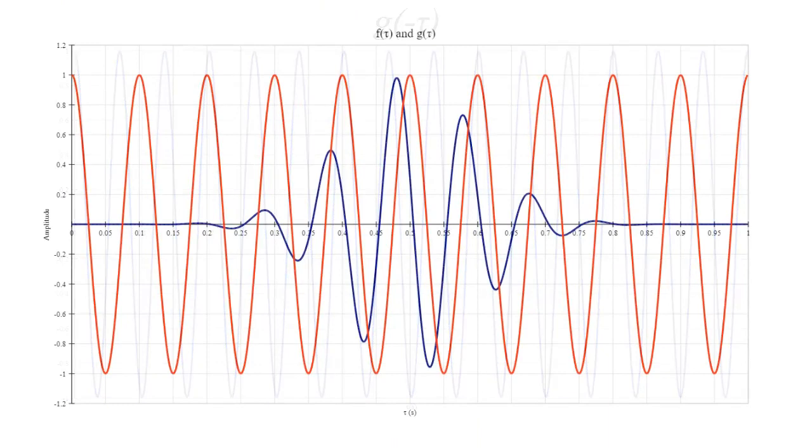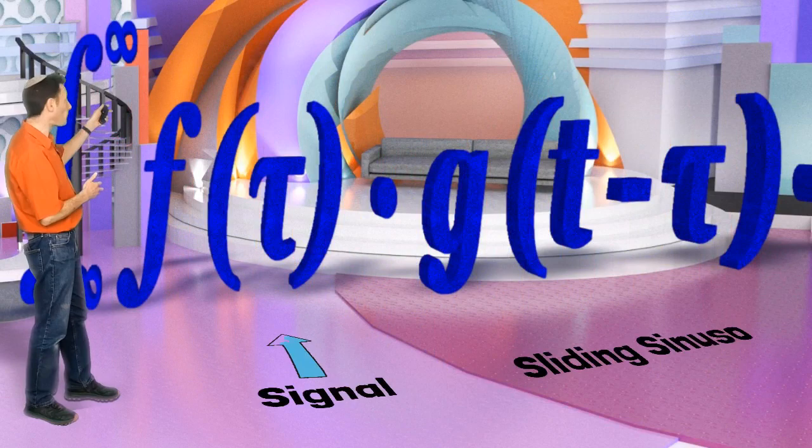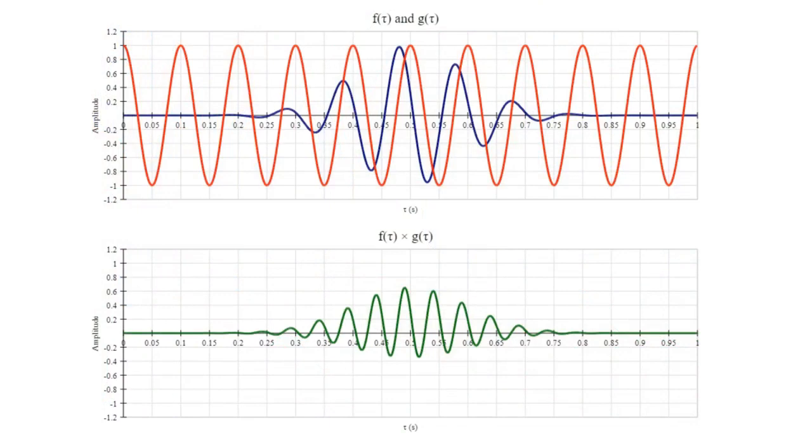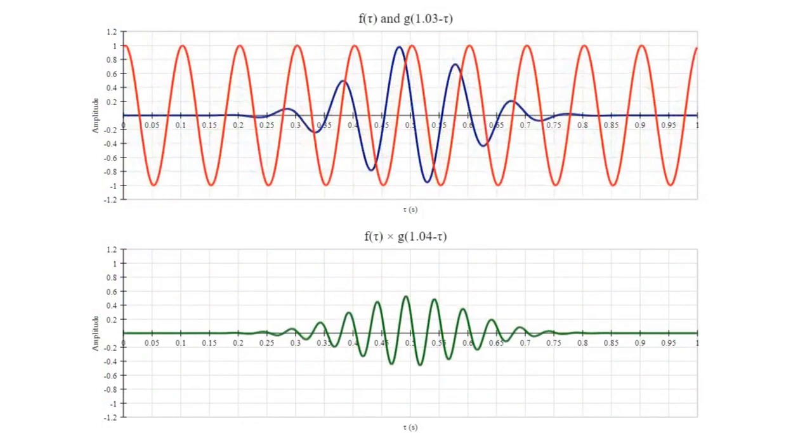F of tau stays still, while g of tau slides over it. As this happens, the two signals are multiplied together. Let's plot this on a second graph. As t changes, the graph of the product of the two signals moves up and down over the x-axis.